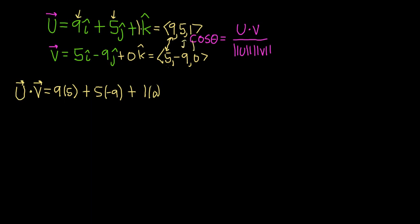This is really nice because something beautiful is going to happen. I did not expect this. This is 45 minus 45. This is wonderful. This is going to save us so much time, plus 0. So, this is just 0. So, we have this beautiful scenario where u dot v is actually equal to 0.